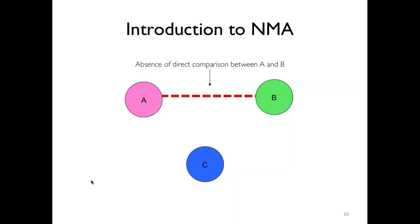We may be interested in A versus B, but only have randomized trials of A versus C and B versus C. In this case, we can calculate an indirect estimate for A versus B using the estimates from direct comparisons A versus C and B versus C.